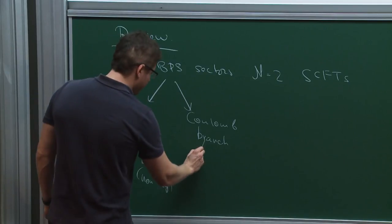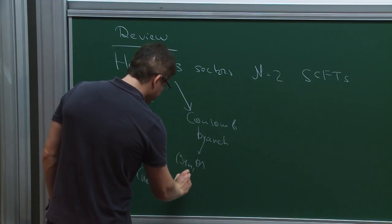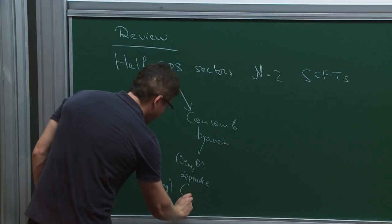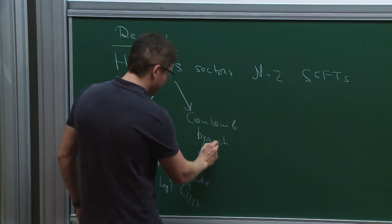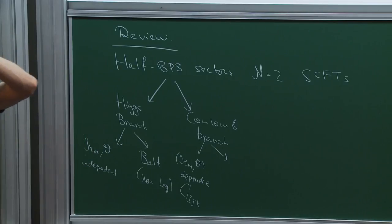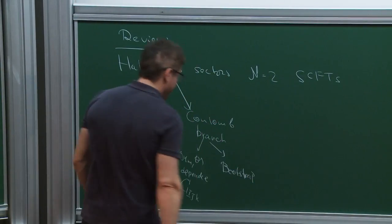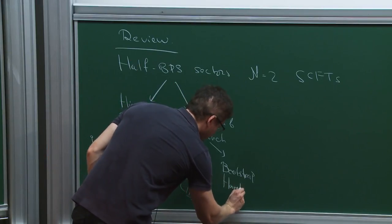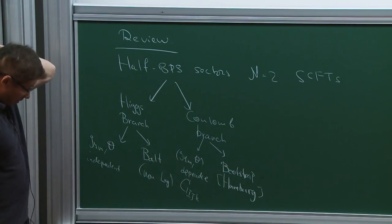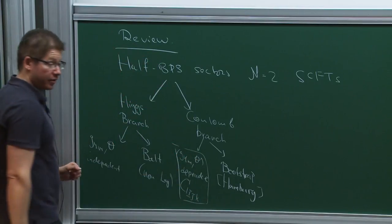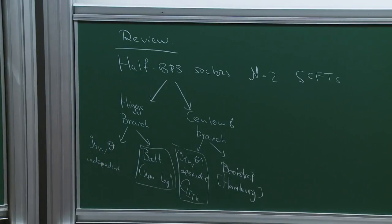For Coulomb branch operators, there is already a lot to say for Lagrangian theories, since there is a dependence on the Yang-Mills coupling and the theta angle—the structure constants and OPE coefficients depend on those parameters. So there is a lot to be said for Lagrangian theories, but for non-Lagrangian theories, at least at the moment, there hasn't been much analytical progress. There are some bootstrap results by essentially the Hamburg group, and I'll give more references at the end.